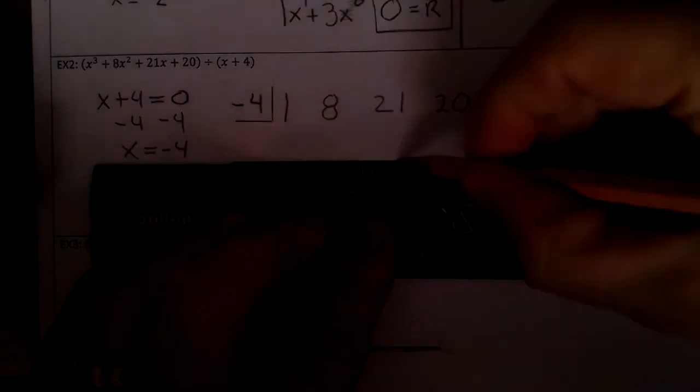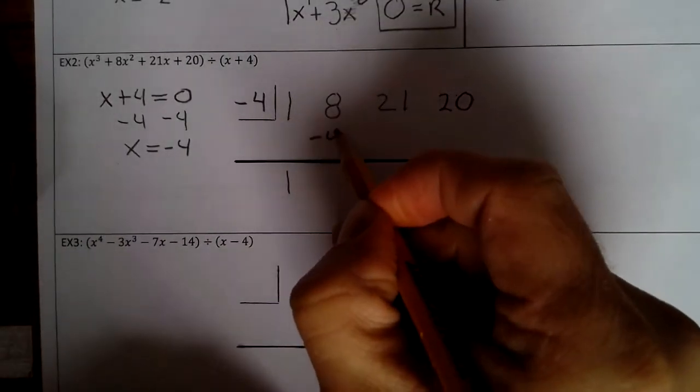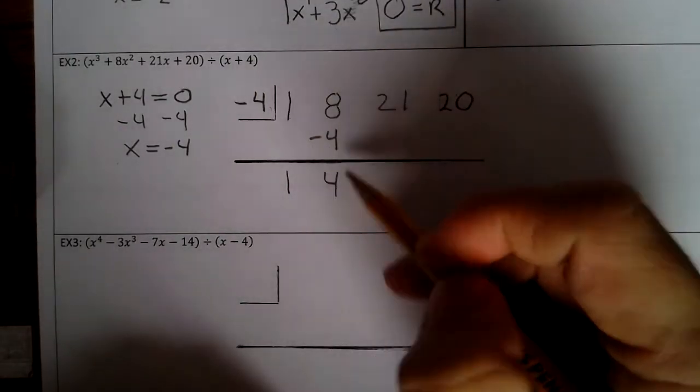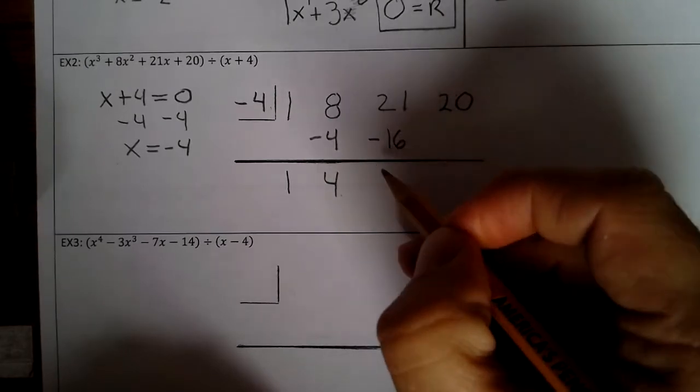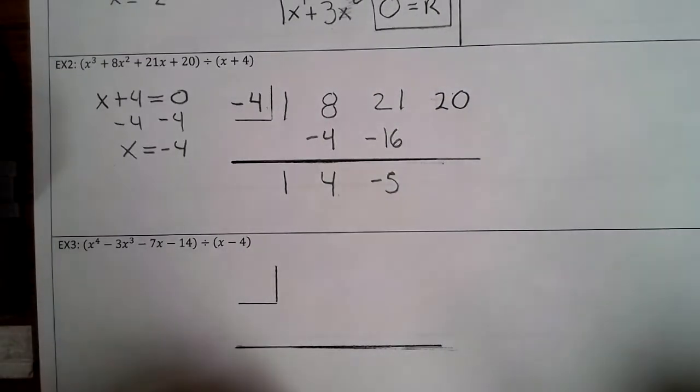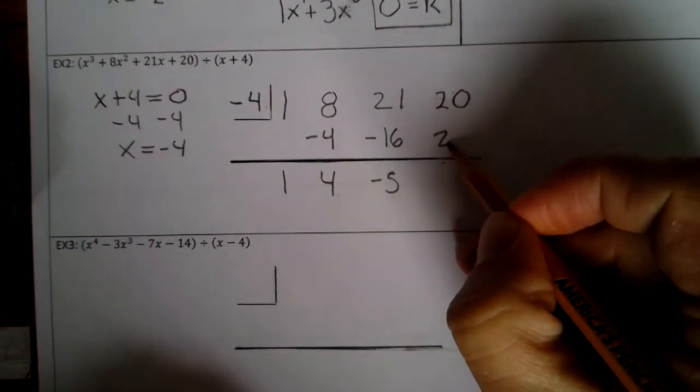Alright, so we bring down the 1. Negative 4 times 1 is negative 4. 8 minus 4 is 4. Negative 4 times 4 is negative 16. 21 minus 16 is 5. Negative 4 times 5 is 20. So we have a remainder of 40.